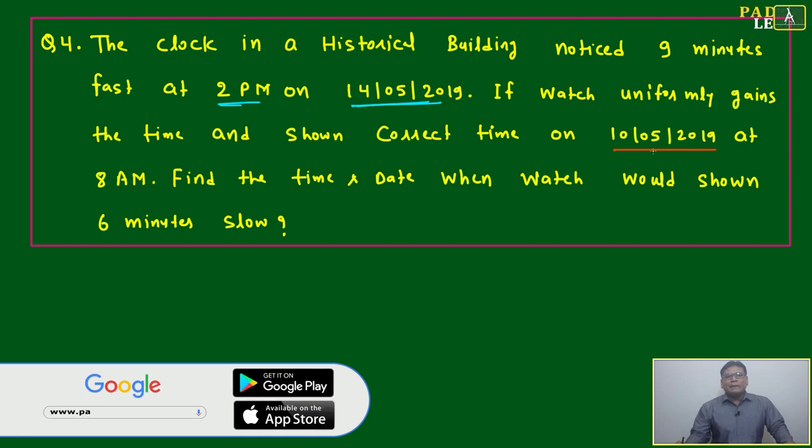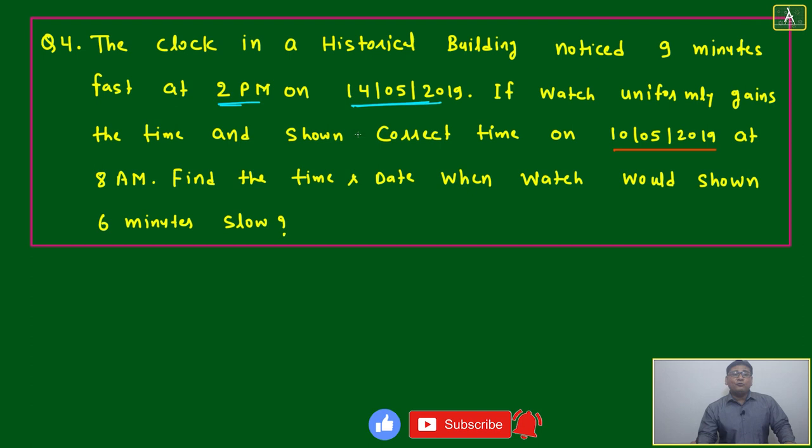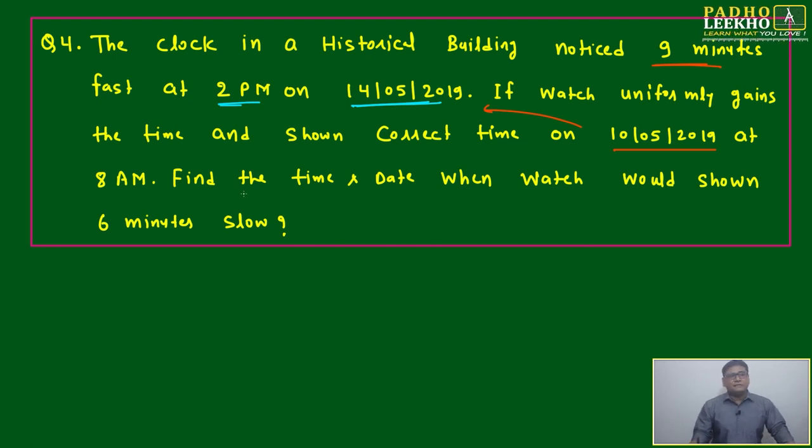If watch uniformly gains the time and shows correct time on 10/5/2019 at 8 AM - it was 9 minutes fast at 2 PM on 14th, but it was correct on 10/5/2019 at 8 AM. From this time to this time it has gained 9 minutes due to which it has become 9 minutes fast.